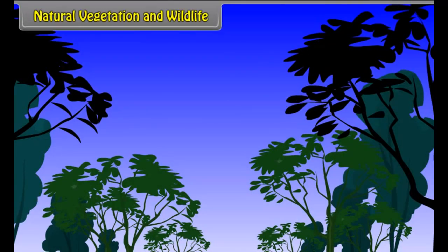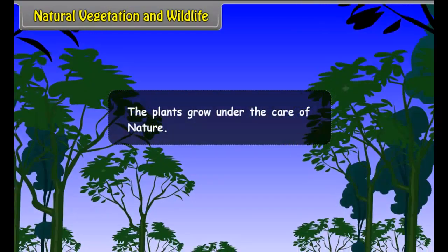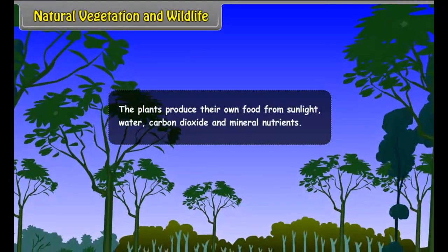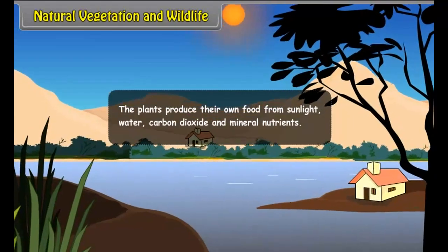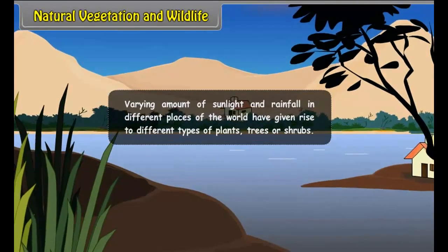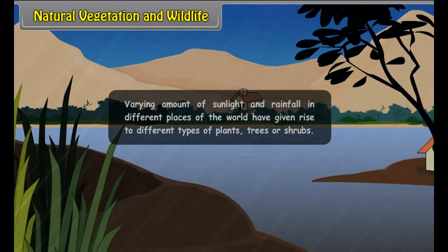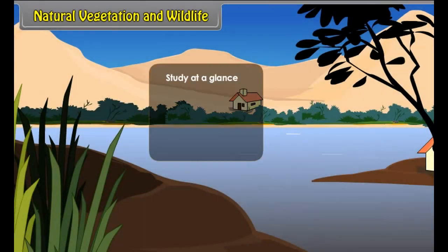Natural Vegetation and Wildlife. The plants grow under the care of nature. The plants produce their own food from sunlight, water, carbon dioxide and mineral nutrients. Varying amounts of sunlight and rainfall in different places of the world have given rise to different types of plants, trees or shrubs. Each of these plant groups forms a large ecosystem, occupying parts of the continent.